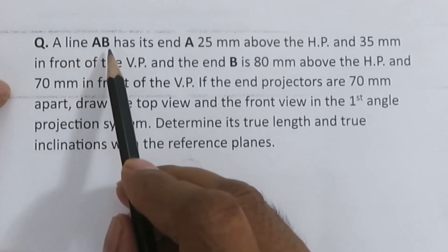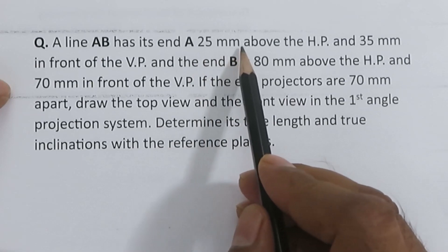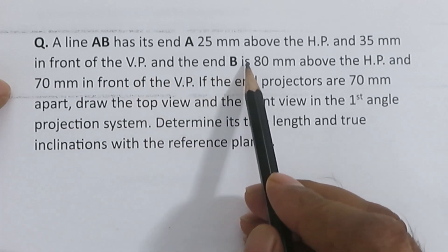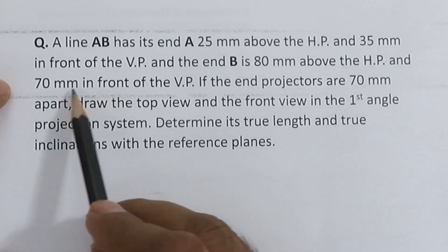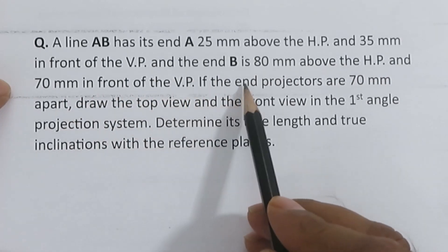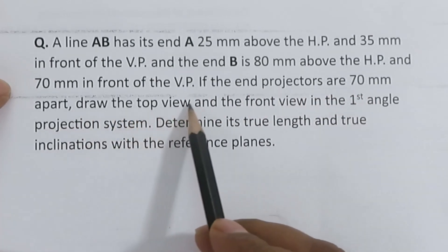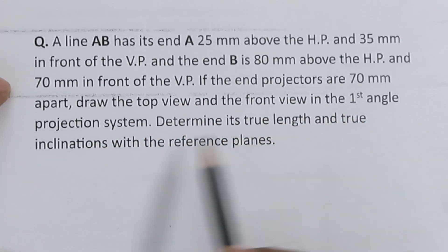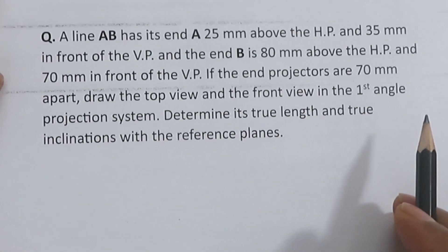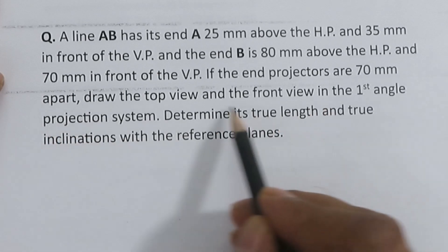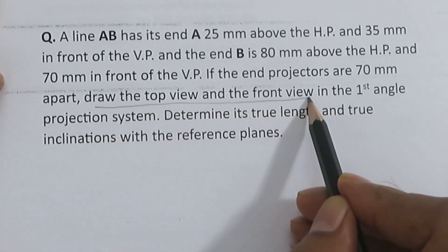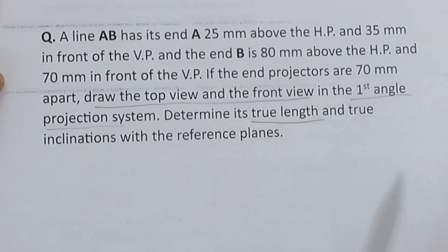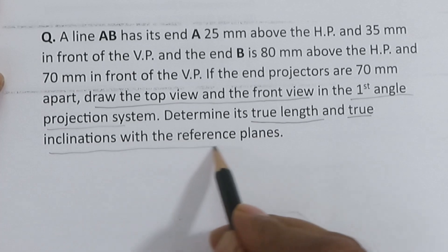The problem: a line AB has its end A 25mm above the HP and 35mm in front of the VP. End B is 80mm above the HP and 70mm in front of the VP. The end projectors are 70mm apart. We must draw the top view and front view in the first angle projection system, then determine the true length and true inclinations with the reference planes.